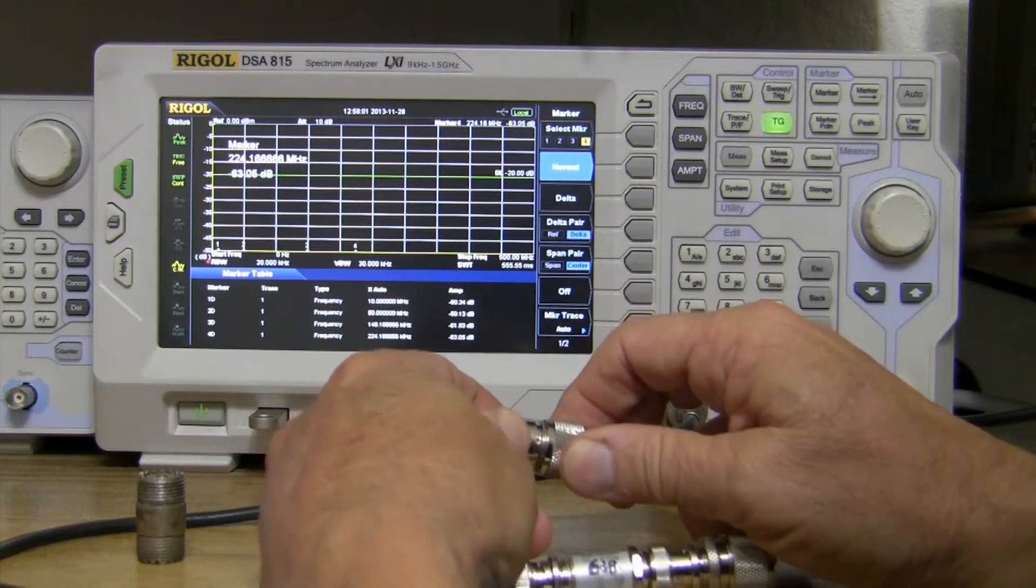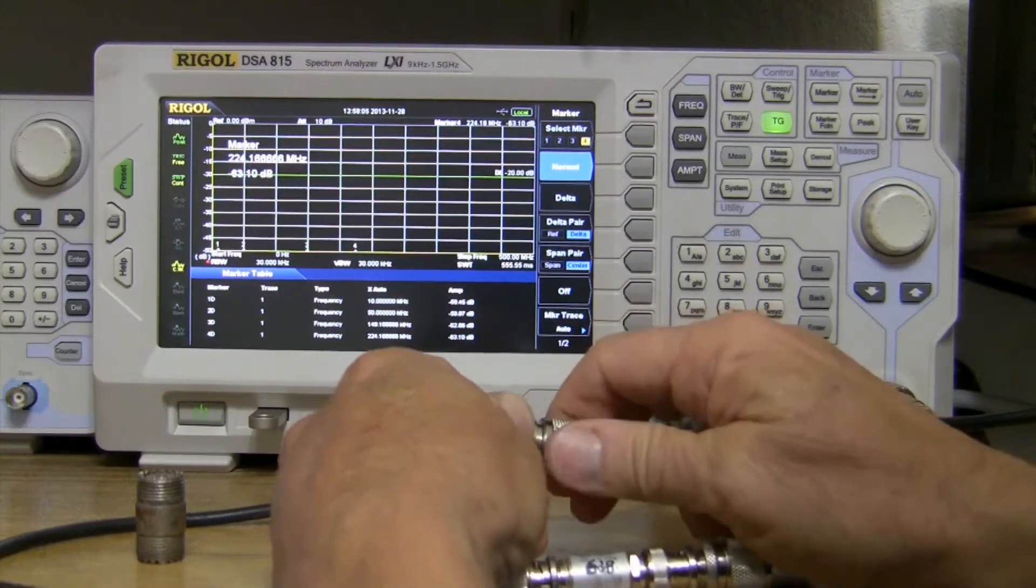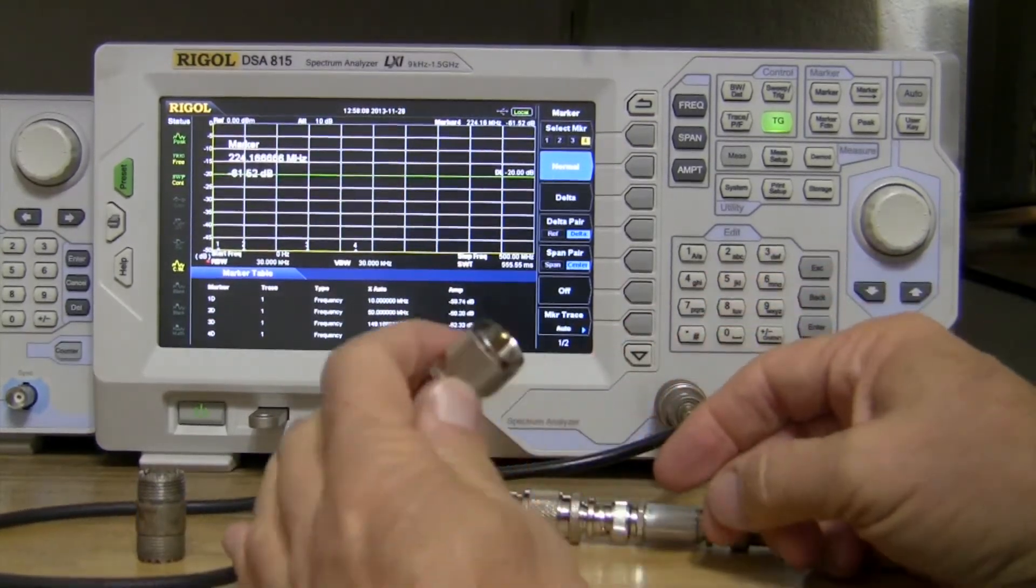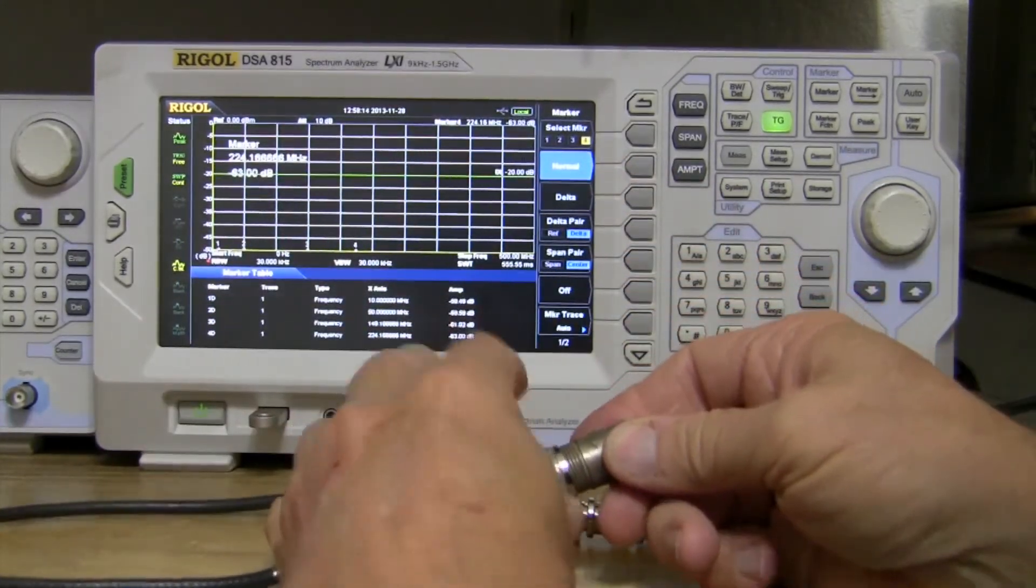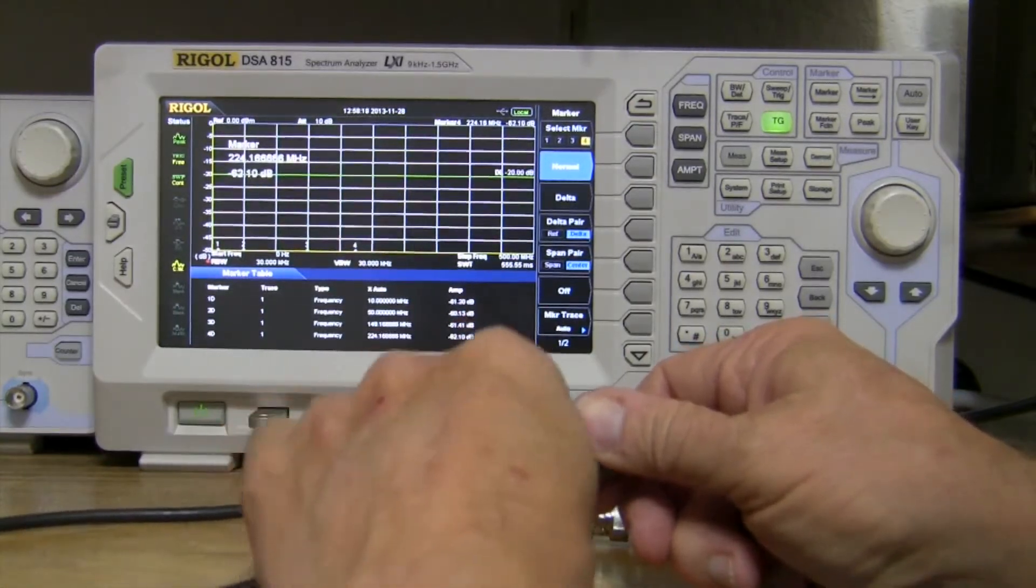And then make sure you find the detent and then screw it the rest of the way on. That's easier to do with this obviously, so on this end I do that.